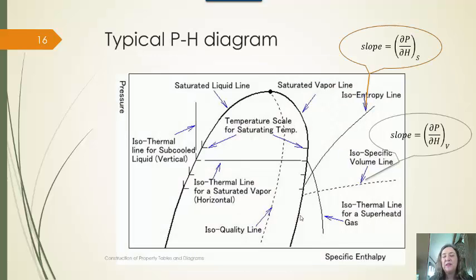So, again, looking at what the typical features are. We have pressure typically as a log on one axis. Enthalpy as the other axis. We have a region where we have the two phases. We have liquid to the one side. Vapor to the other side. And then we have different curves.